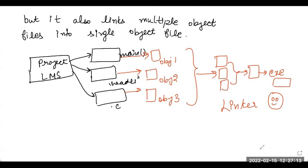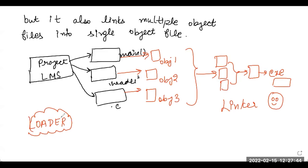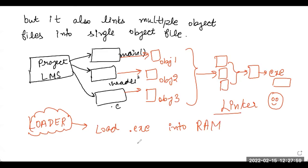Then you are ready to run your program. But before that, there is one more step: the loader. After the linker, the loader loads the produced .exe file generated by the linker into RAM — random access memory — for execution.